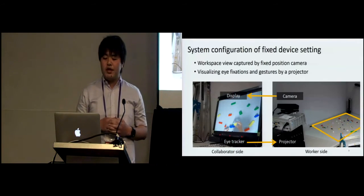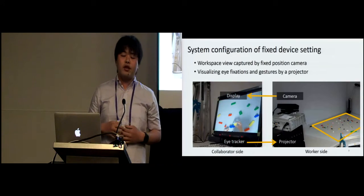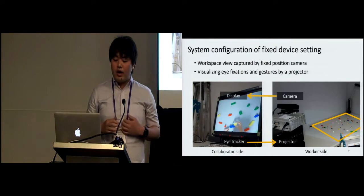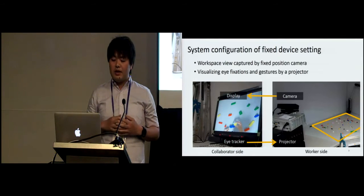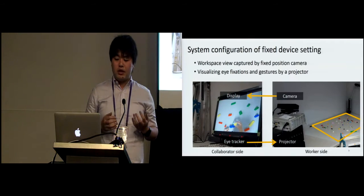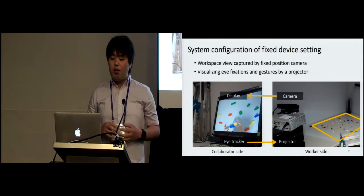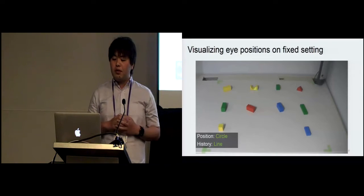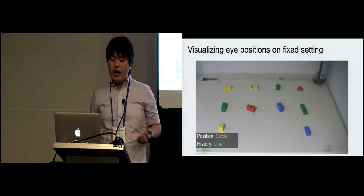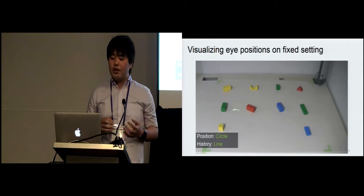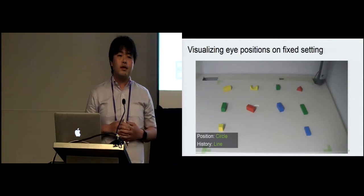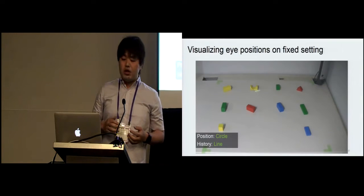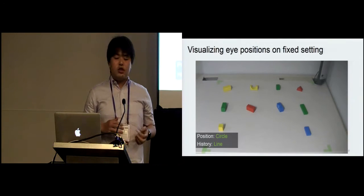This slide shows the system configuration of the fixed device setting. The collaborator side has a display and eye tracker. The worker side has a camera and projector. We perform projector-camera calibration before using the system. In this video, we can see how the collaborator's eye position and its trails are displayed on the worker's workspace. The green circle represents current gaze position and the green line shows its trail.